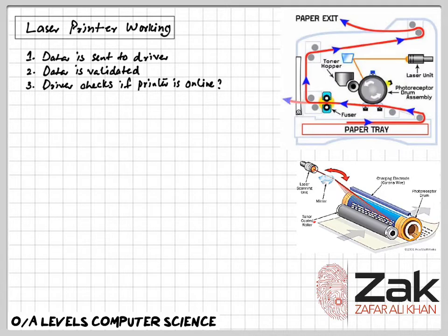A check is made by the printer driver to ensure that the chosen printer is available to print. Is it busy? Is it offline? Is it out of ink? Data is then sent to the printer and stored in temporary memory known as the printer buffer.